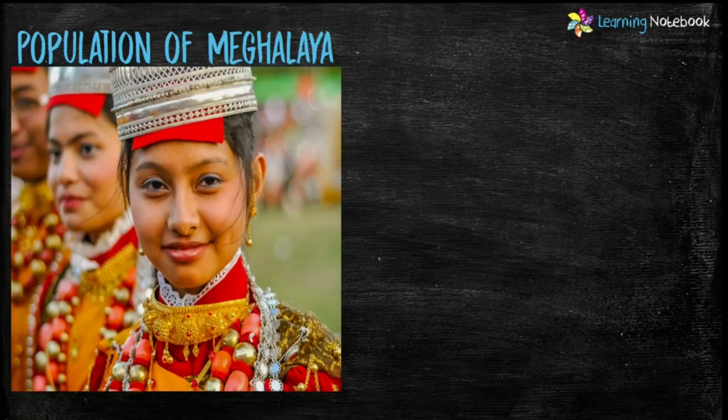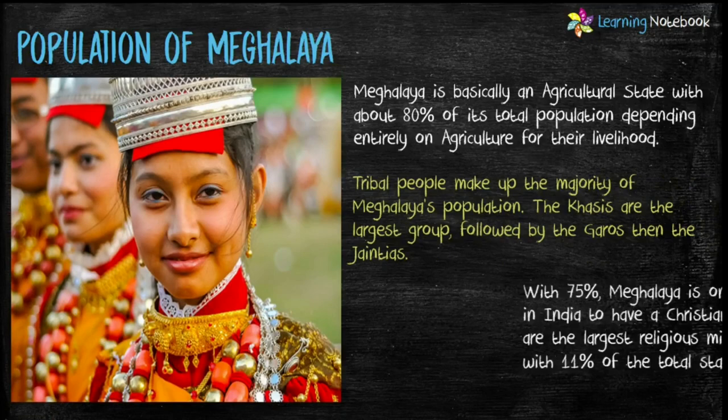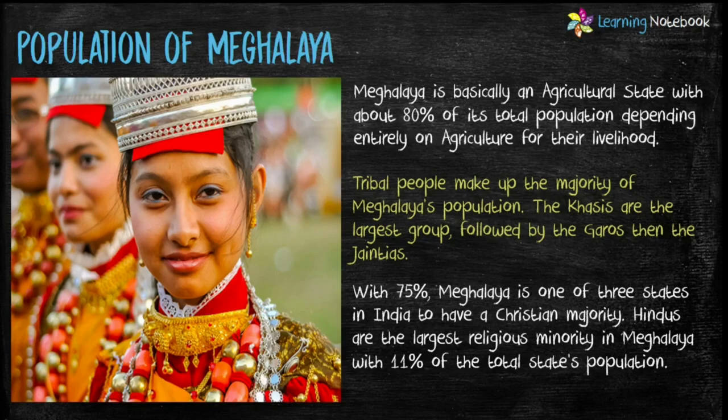Next is the population of Meghalaya. Meghalaya is basically an agricultural state with about 80% of its total population depending entirely on agriculture for their livelihood. Tribal people make up the majority of Meghalaya's population. The Khasis are the largest group, followed by the Garos, then the Jaintias. With 75%, Meghalaya is one of the three states in India to have a Christian majority.